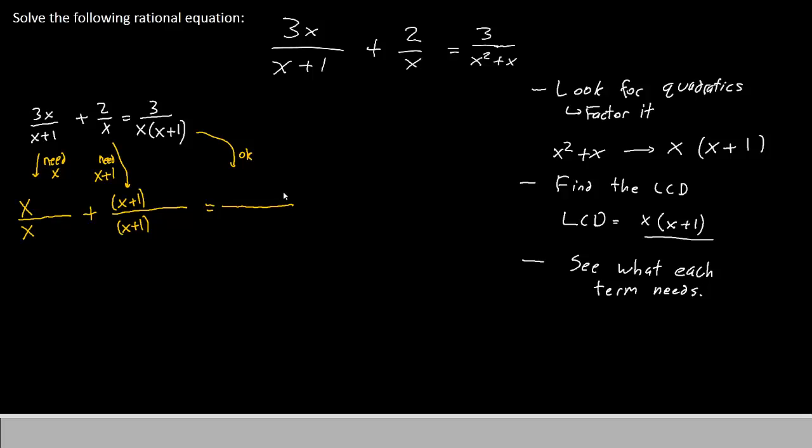Now we simply bring down what was already there. For the first term, we'll have 3x and x plus 1, just like it used to have. For the second term, we'll say 2 and x, just like it used to have. For the third term, we will still have 3 over x times x plus 1. So now we have all of our terms in their correct places. Our next job will be to simplify them.